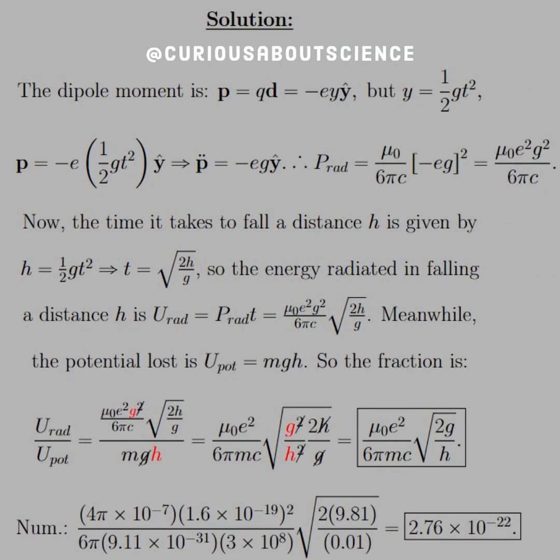All right, so the dipole moment, P is equal to qd. Okay, well, again, q, we were given as an electron, so we have negative e. And it falls some distance y, so we have that falling in the y hat. Here, though,